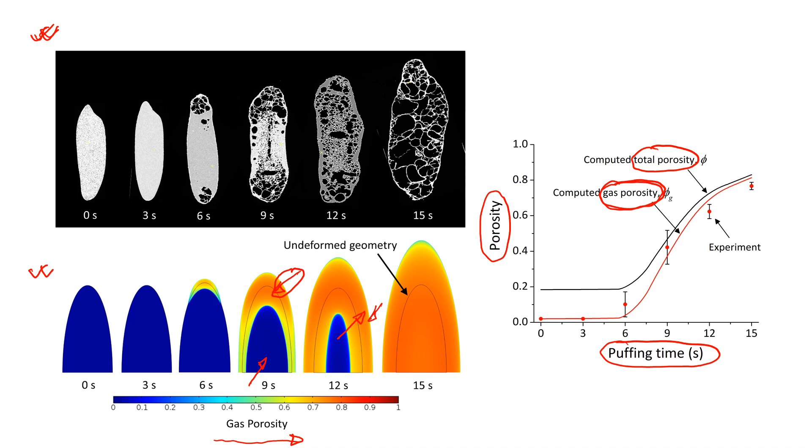Here we see that porosity increases with time, but the process doesn't start until about six seconds when the material has melted enough and there is enough evaporation inside to generate the pressure. So the material has started to expand. As mentioned earlier, this porosity development with time, porosity with puffing time, and the final porosity is going to be of critical interest from a quality standpoint.